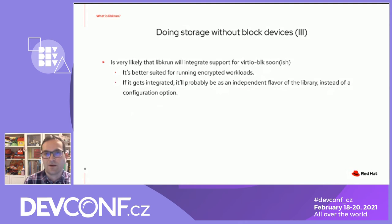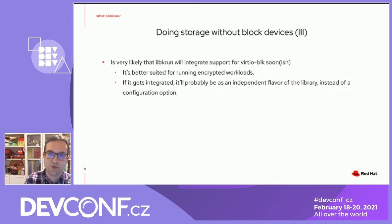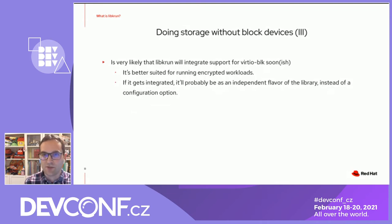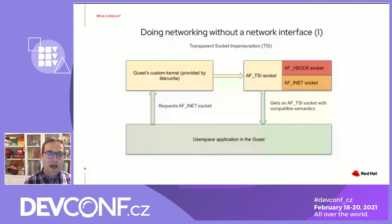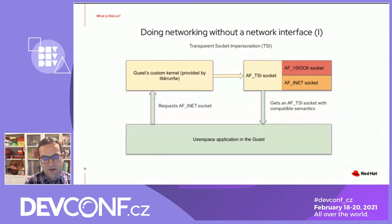Switching to another topic — similarly to VirtioBlock, among the list of Virtio devices that LibKRun supports, there is no VirtioNet, nor any other device that would allow the guest to use a virtual network interface. So how are we doing networking without a networking interface in the guest? We are using a novel approach called transparent socket impersonation, or TSI, which is implemented inside the guest custom kernel provided by LibKRun firmware, and doesn't require any kind of changes on the user space application. The trick is that when the user space application requests an AF_INET socket to the kernel, what it's actually getting is an AF_TSI socket with compatible semantics. This AF_TSI socket wraps an AF_VSOCK socket and an AF_INET socket inside it.